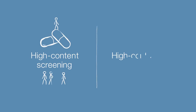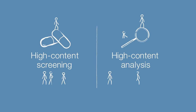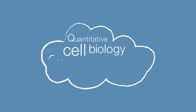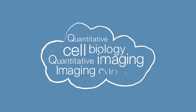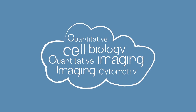The first applications of high content screening were focused on drug discovery, but the technique later became known as high content analysis in order to include scientists working across different areas. Terms like quantitative cell biology, quantitative imaging, and imaging cytometry are all terms for single cell analysis using images as a basis for detection.